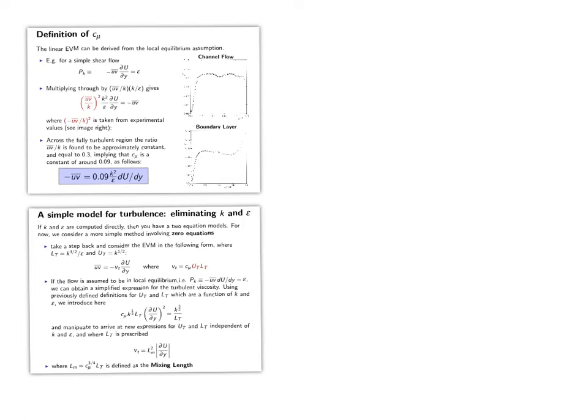Okay, in this video we look at how the local equilibrium assumption that production of turbulence is equal to dissipation of turbulence can be used to provide an approximation for the Bussin-S relationship but also the constant 0.09 using experimental data, and then we're going to look at how you can eliminate the need for having K and epsilon so that you get something which is entirely independent of the turbulence quantities K and epsilon, which is known as the mixing length model.